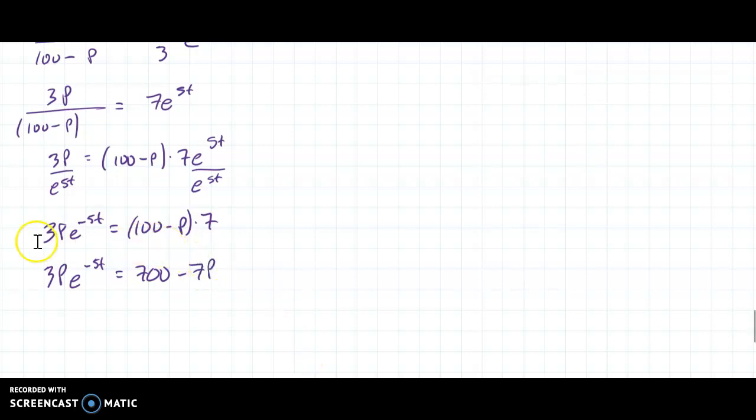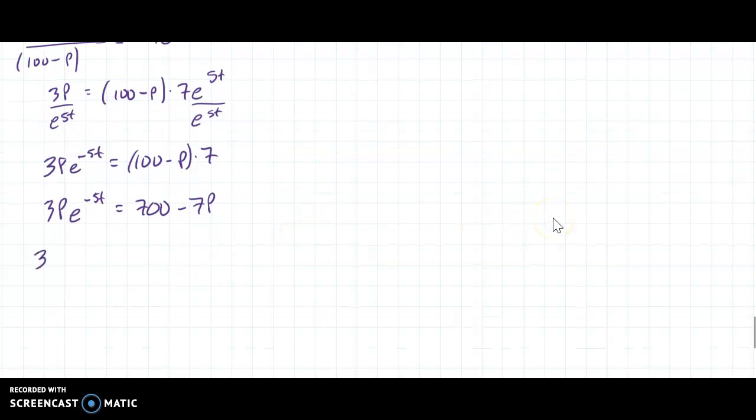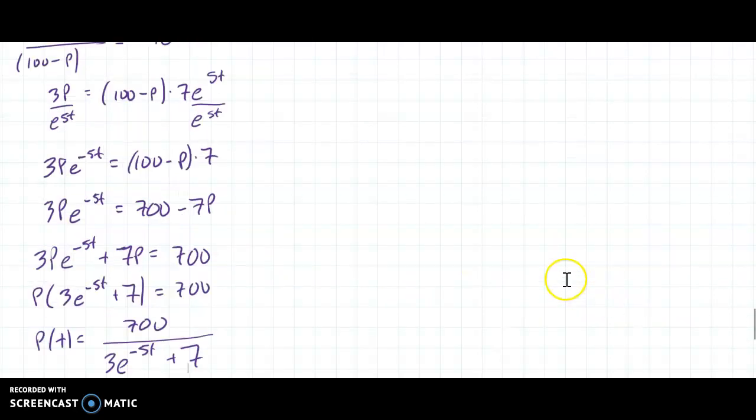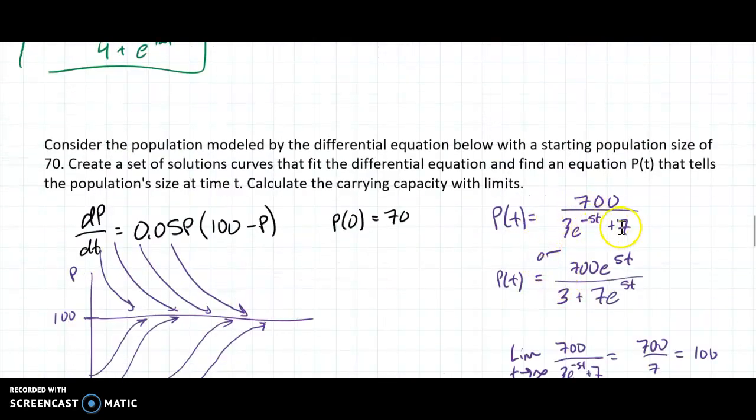Now, I've got to get all the P terms on the left side. So I get 3Pe^(-5t). Add the 7P to both sides equals 700. And now I can factor P, open parenthesis, 3e^(-5t) + 7 is equal to 700. And then I can divide. So I get P(t) = 700/(3e^(-5t) + 7). And hopefully that matches what I have here. 3e^(-5t) + 7. Yep, there we go.